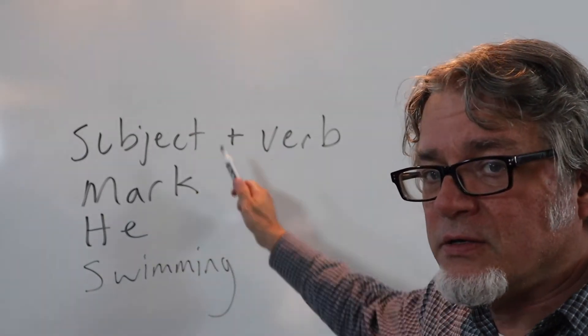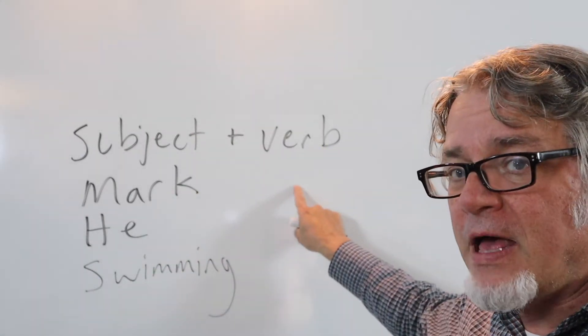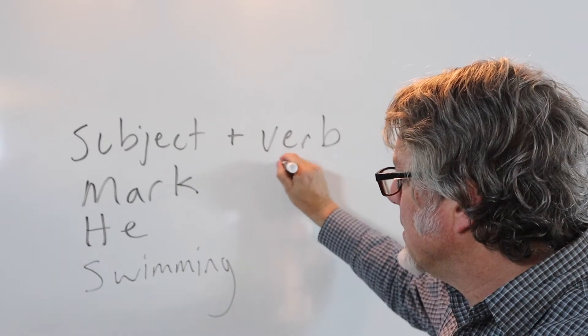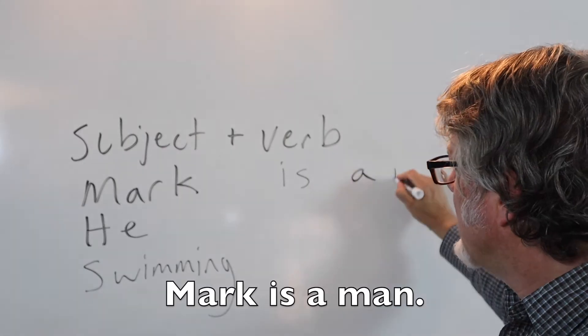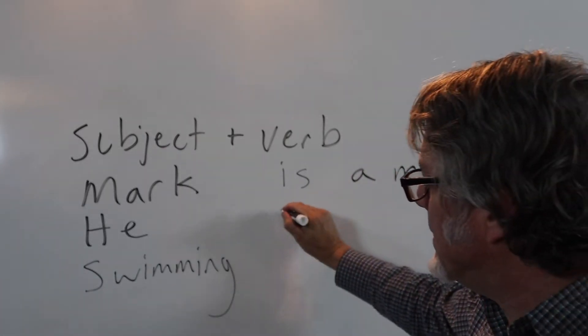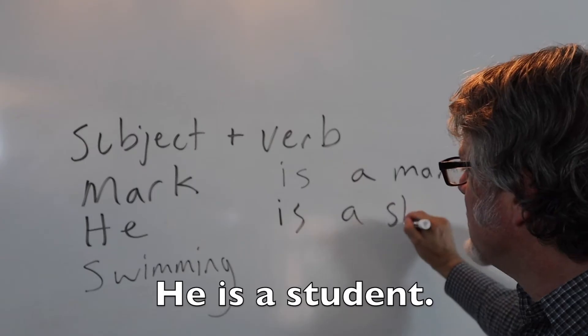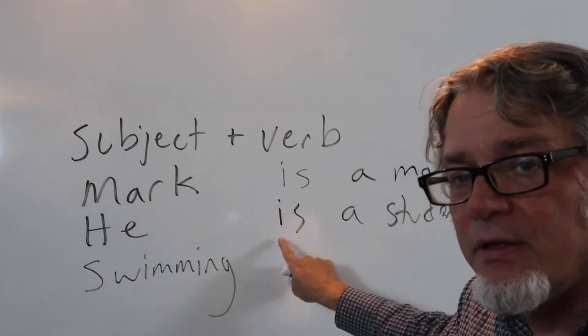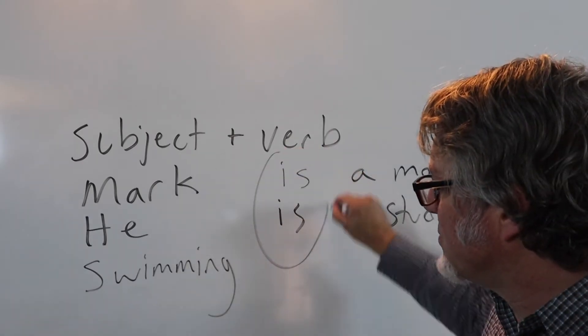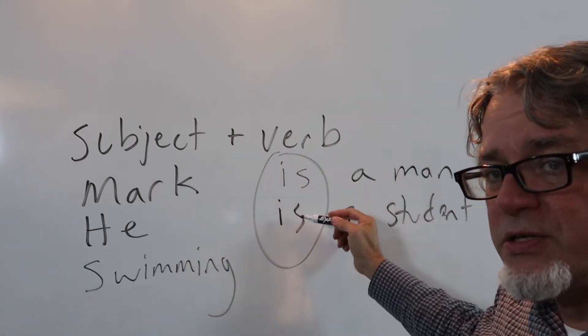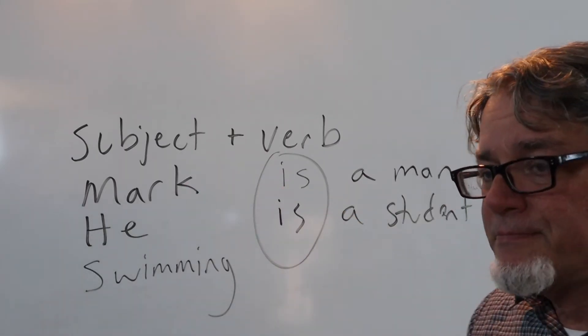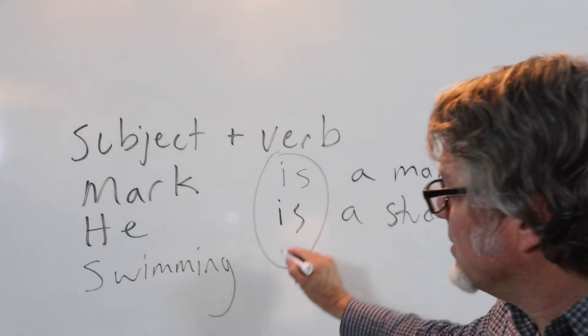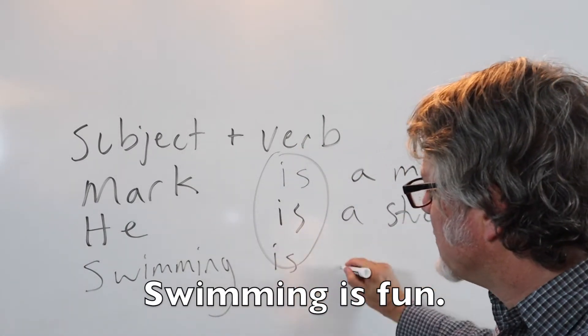These are subjects and the verb that matches. Let's say if it's in the present tense, Mark is a man, or he is a student, these match the verb. The verb is be, but it changes in the present tense to match the subject. And this gerund can also use this same verb. Swimming is fun.